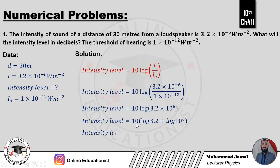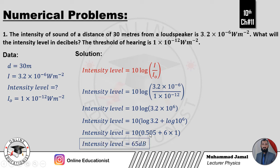Ab calculate karenge calculator se. 10 into (log 3.2 + log 10^6). Log 3.2 equals 0.505. Power mein jo aata hai exponent mein, power pehle likhte hain aur log lete hain: 6 log 10 — log 10 ki value 1 hoti hai. To 0.505 plus 6 equals 6.505. Yhe 10 se multiply hokar 65.05 approximately 65 — answer aata hai 85 dB.